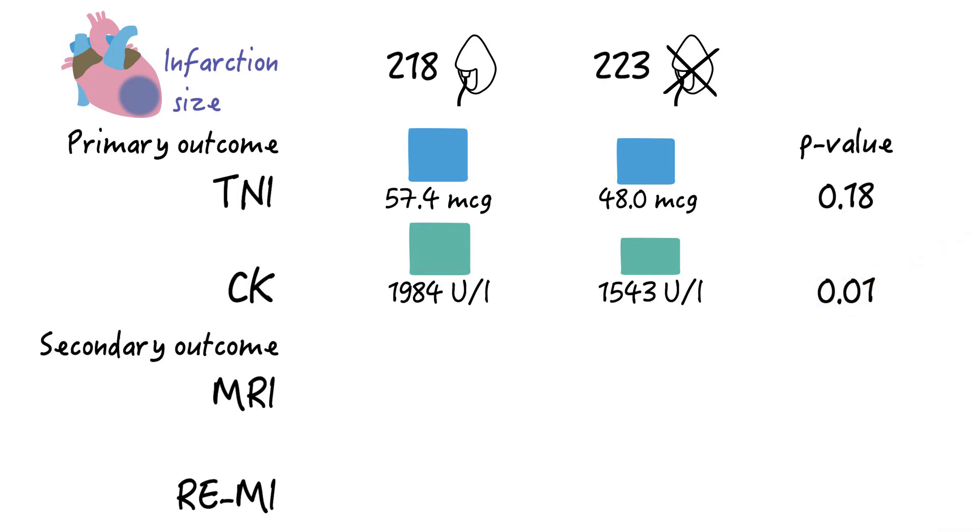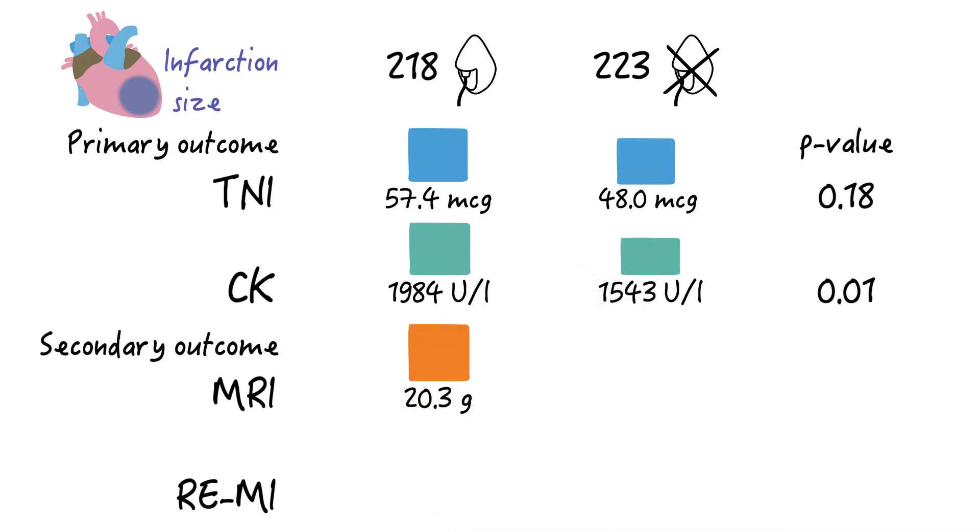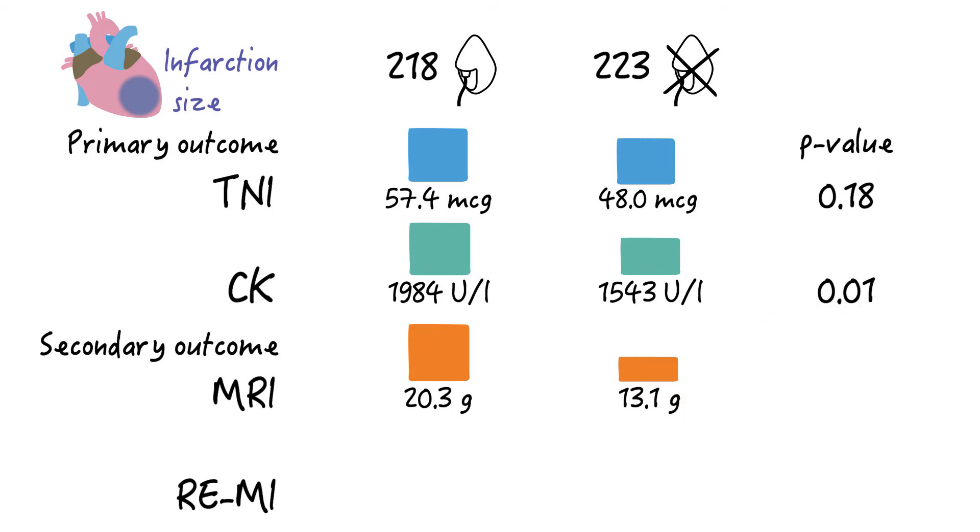How about infarction size as assessed by MRI? Infarction mass as expressed in grams was 20.3 grams in the oxygen group versus 13.1 grams in the room air group. P-value 0.04. Also significant.